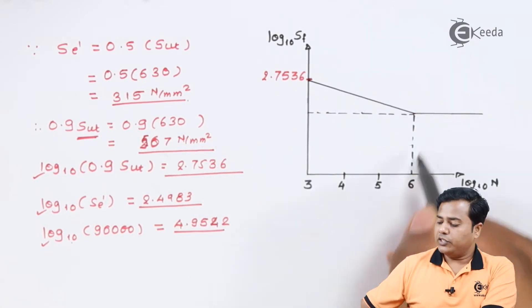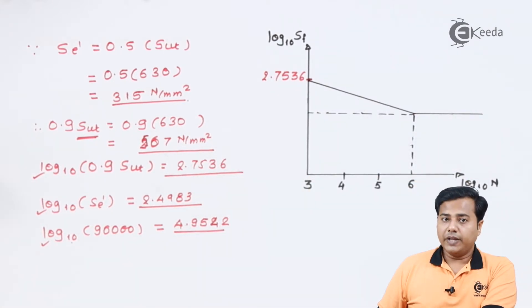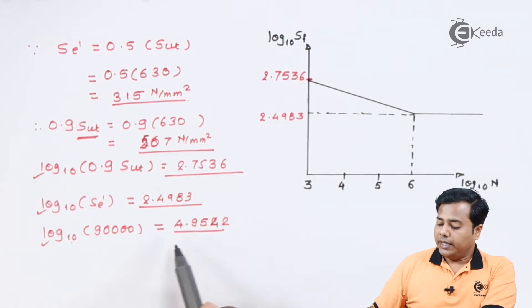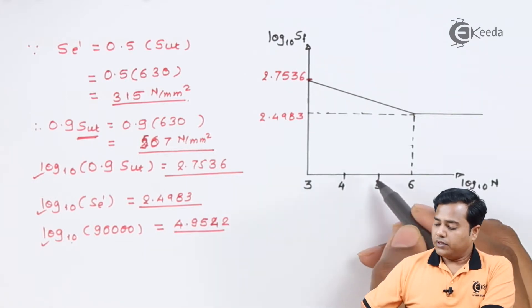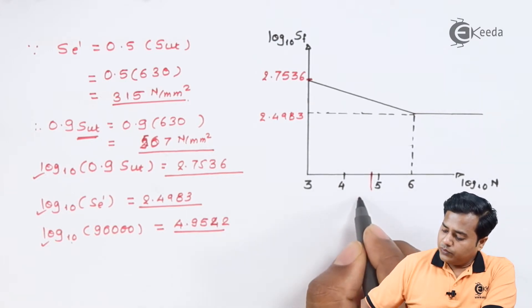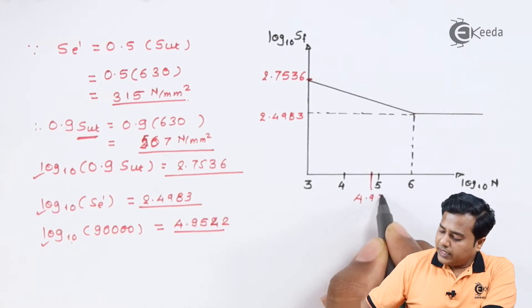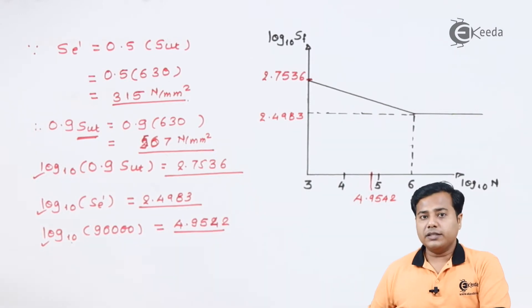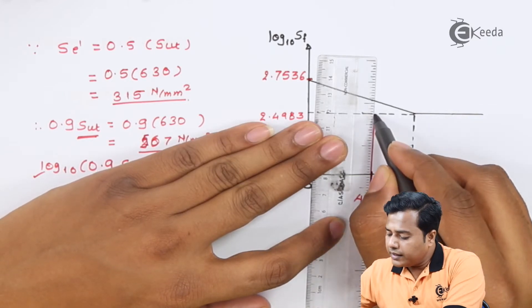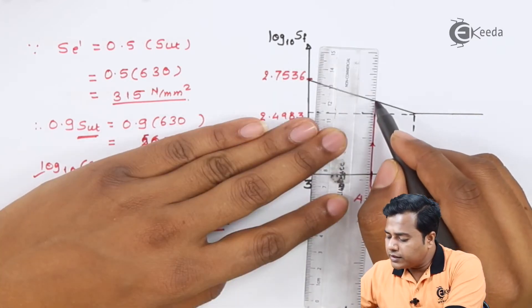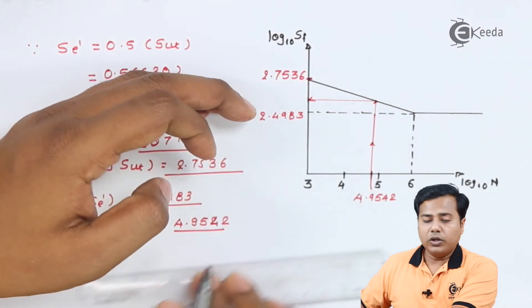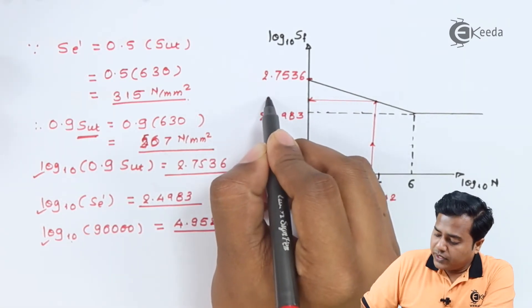So let us substitute and let us plot the values. We know that at 10 raise to 3, the value comes out to be 2.7536. And we know that at 10 raise to 6, that is the maximum cycle, we have the value 2.4983. Somehow the 90,000 cycles fall in this range, which with the value 4.9542. As we use it as a normal procedure, we will have to draw the line connecting this ahead till this inclined line.